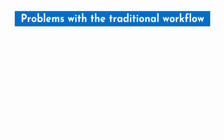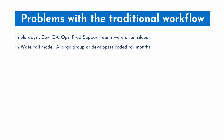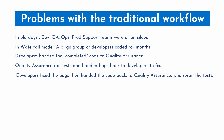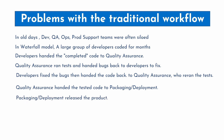Let's have a look at the problems with the traditional software development lifecycle workflow. In older days, dev, QAs, operation team, prod support — these teams were often siloed and worked independently with no visibility into what's going on with other teams, even though they were working on the same project. Large groups of developers coded for months and handed the completed code to quality assurance for testing. QA would run tests and hand bugs back to the developer for a quick fix. The developer fixed the bugs and handed code back to QA, which reruns the tests. QA then handed the tested code to the packaging or deployment team for deployment into production. And then they released the complete product all at once. If there were any bugs or defects in the production system, they had to go and do the process all over again.